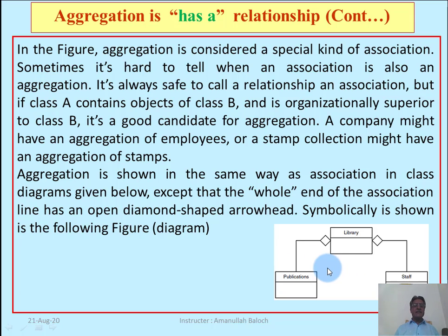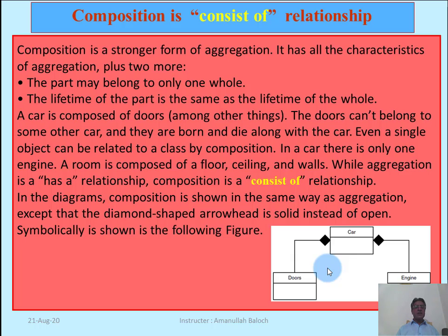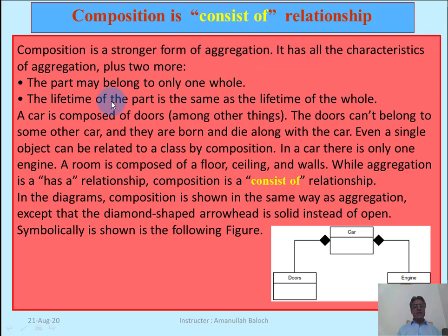Aggregation is a 'has a' relationship, while inheritance is a 'kind of' relationship. Now, composition is a 'consists of' relationship. Composition is a stronger form of aggregation — it is a kind of association stronger than aggregation, whereas aggregation itself is a weaker form of association.